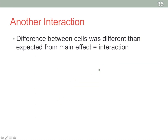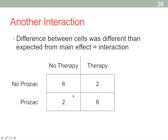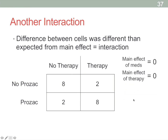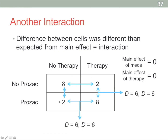It's easy to see this interaction in the table. Averaging across those who didn't receive therapy and those who did gives a five in both cases — averaging an 8 and a 2 yields 5 in both conditions. Similarly, averaging across no-Prozac and Prozac conditions also gives 5 across. So the main effects of therapy and medication are actually zero, because they balance out. But between-cell differences are 6 — much larger than zero. This is clearly a case where main effects don't add up to the between-cell differences.